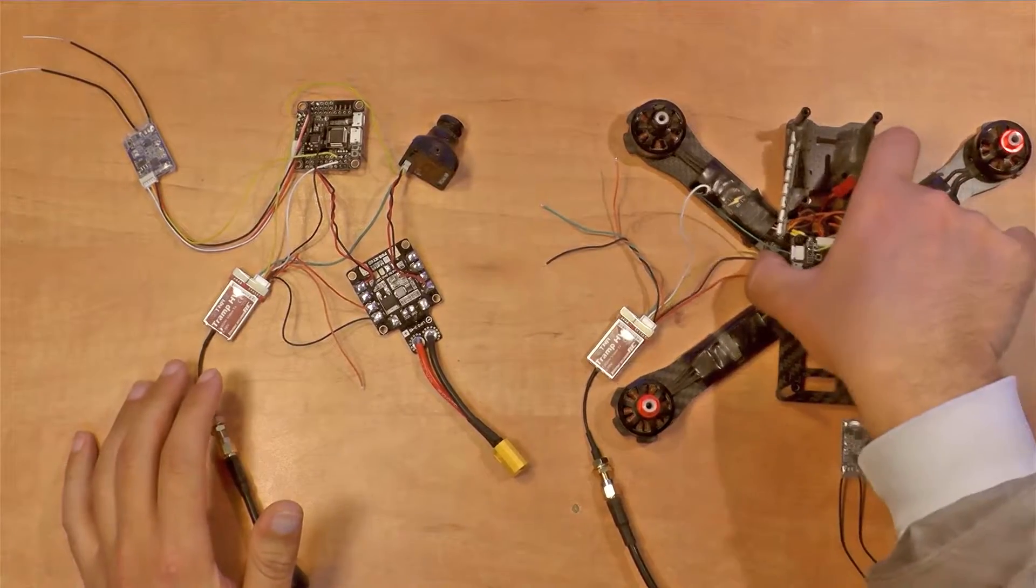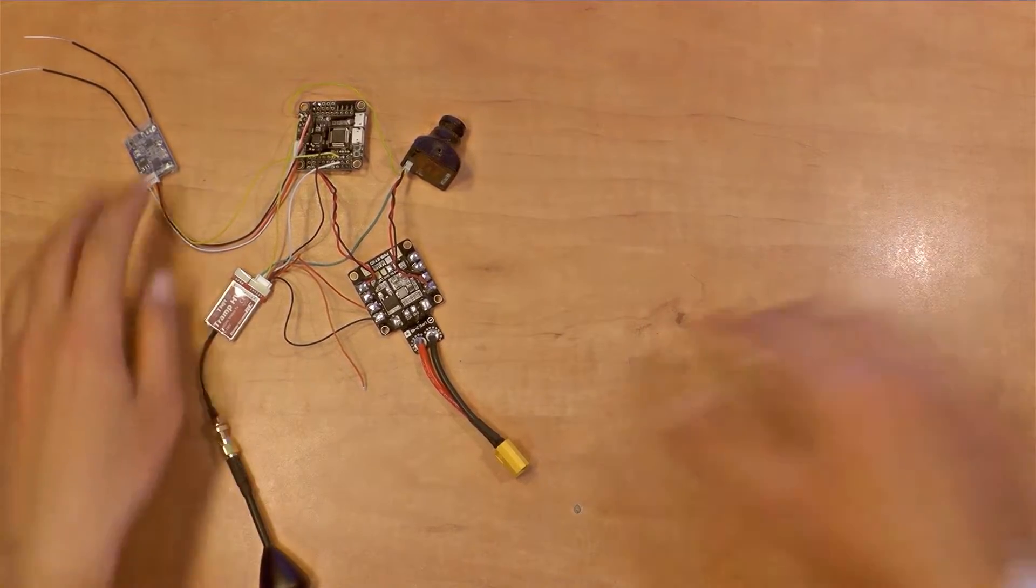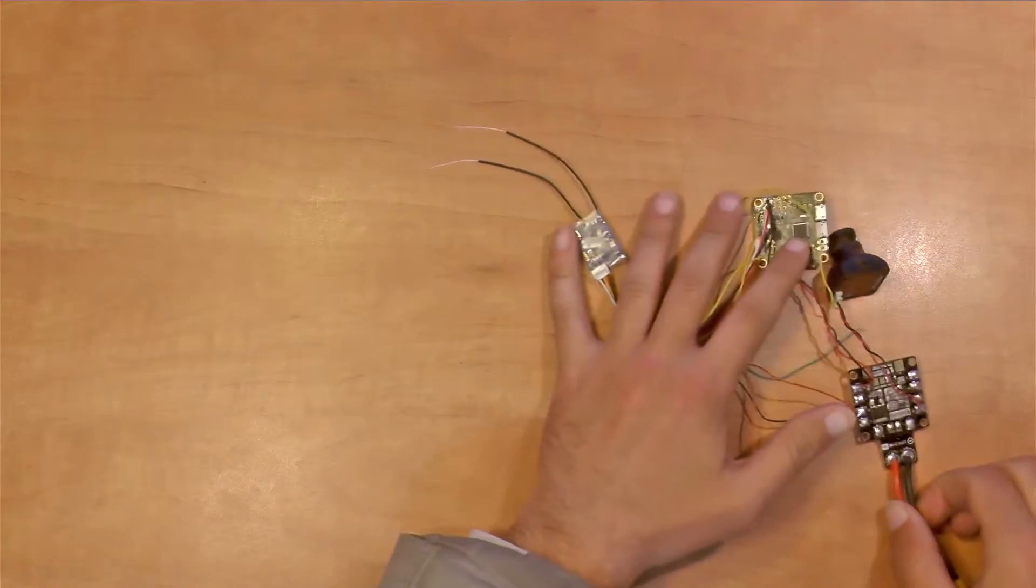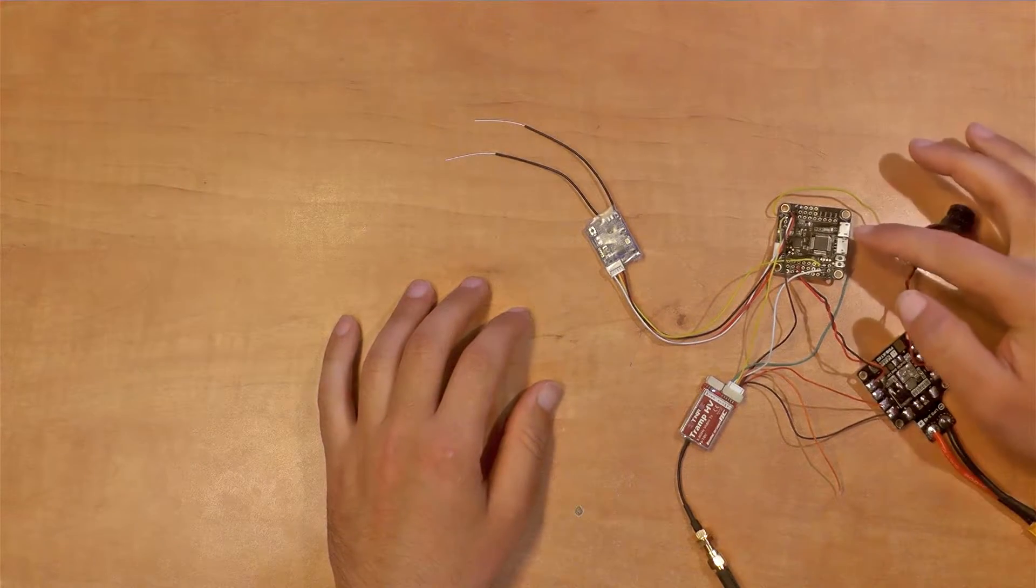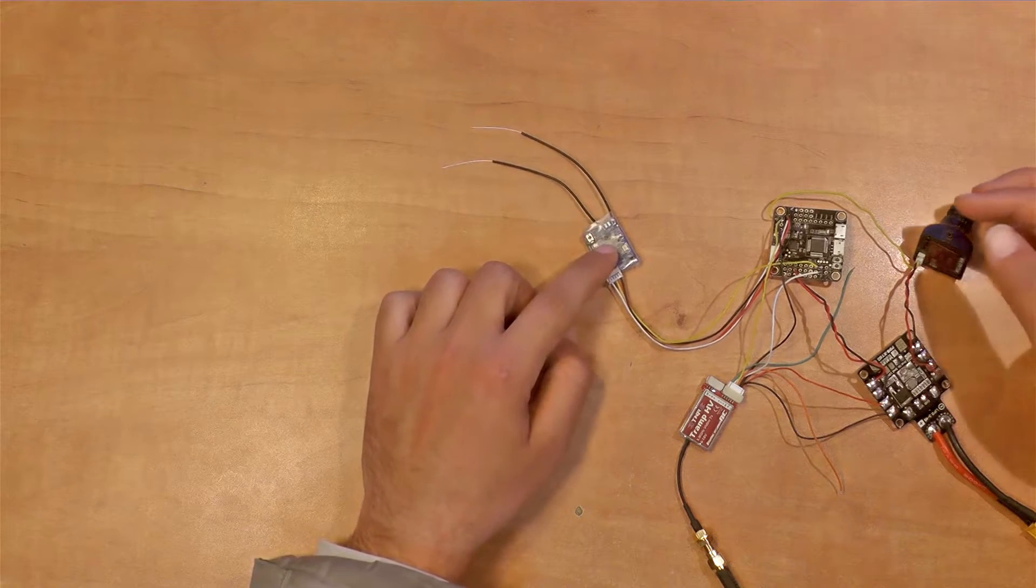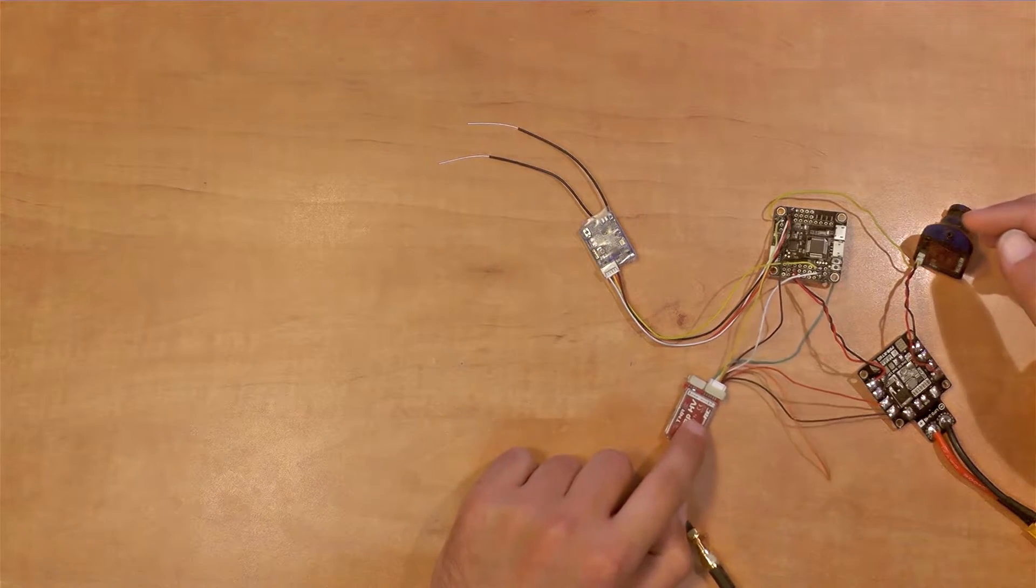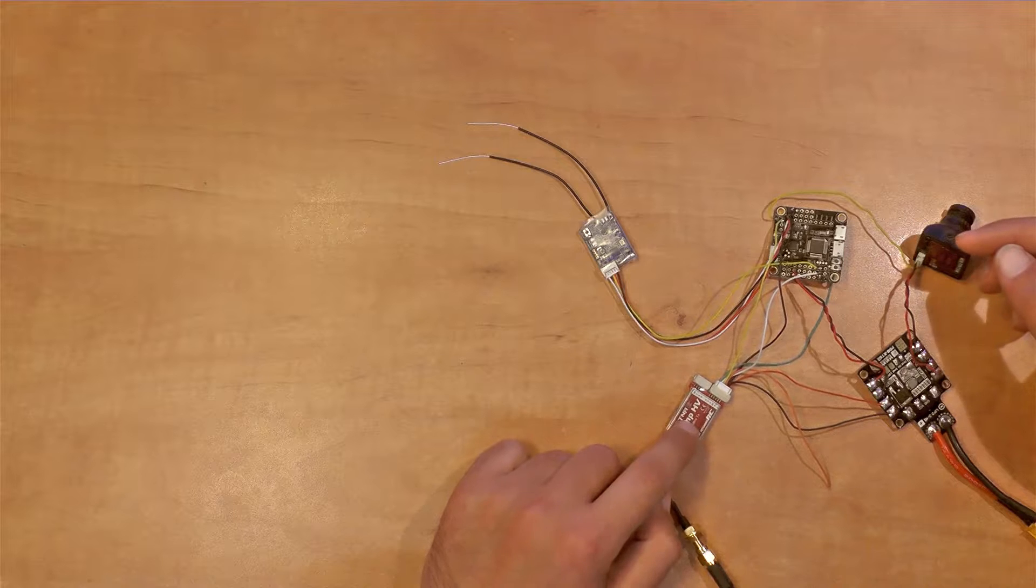Okay, so I'm going to show you a quick demo of how this thing works. Alright, so this is the Omnibus F3 flight controller, this is the XSR receiver and obviously this is the Trump HV VTX.